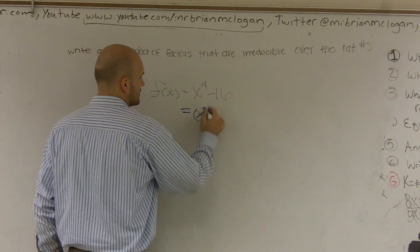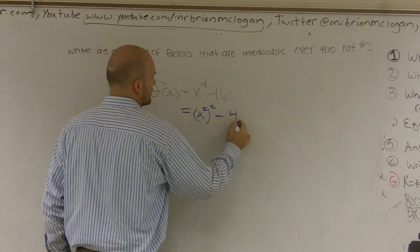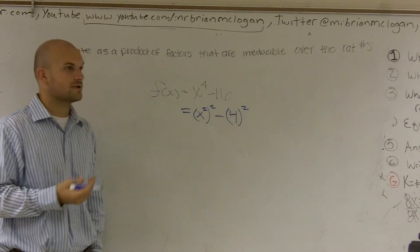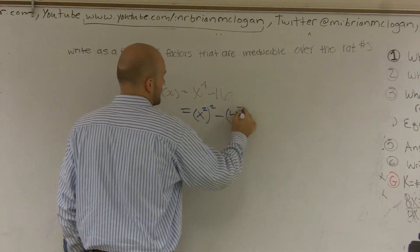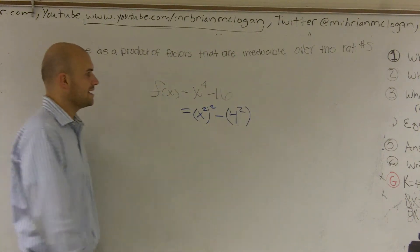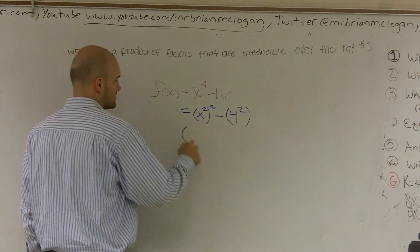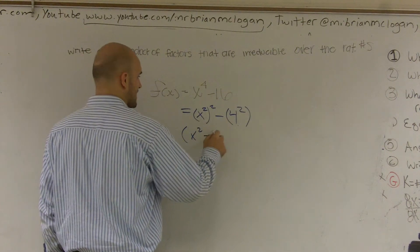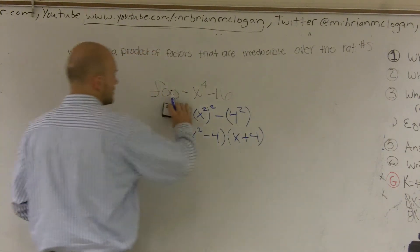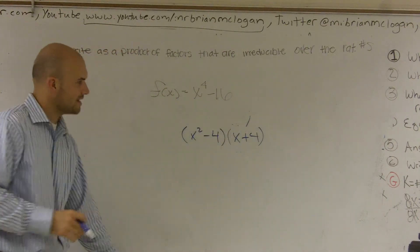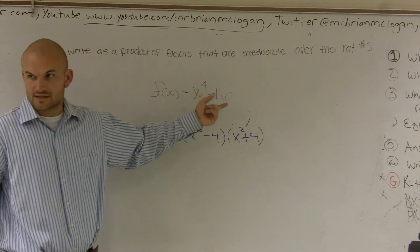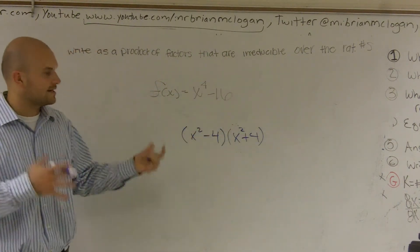And so I have x squared squared minus 4 squared, which is a difference of two squares. And what that means is I can now write this as a pair of factors of x squared minus 4 and x squared plus 4. And if I was to multiply those out, would I get the same? Well yes, x squared times x squared is x to the fourth, negative 4 times 4 is negative 16. So good identifying it's a difference of two squares.